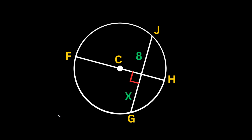For the next few examples we're solving for chord lengths and arc measures using a diameter and a chord. The key rule: when a diameter and a chord intersect at a right angle, the two halves of the chord are congruent. So if one side is 8, then x is also equal to 8.